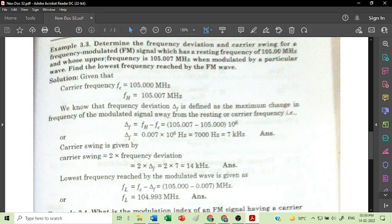Good afternoon. Today I will discuss numericals on frequency modulation. First numerical: determine the frequency deviation and carrier swing for a frequency modulated FM signal which has a resting frequency of 105.00 MHz and whose upper frequency is 105.007 MHz when modulated by a particular wave. Find the lowest frequency reached by the FM wave.